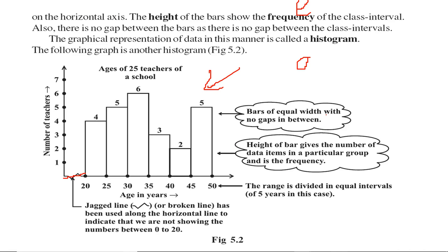In certain cases like this, we have the age of 25 teachers of a school. The lowest age is 20, so we have no entry between 0 to 19. We will show this by a jagged line. This is called a jagged line or broken line. We use it along the horizontal line just to indicate that we are not showing the numbers between 0 to 20; rather we are starting from 20.